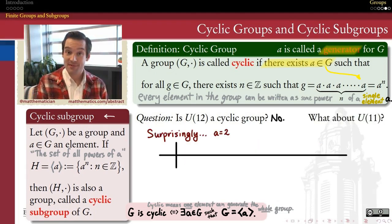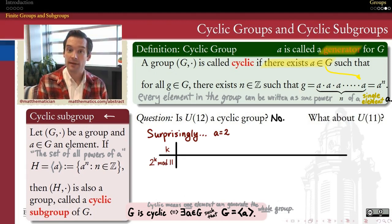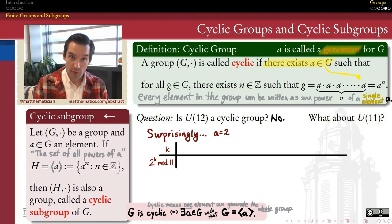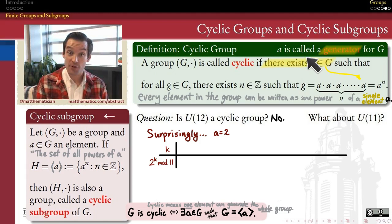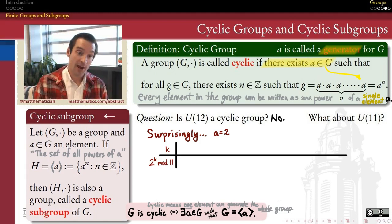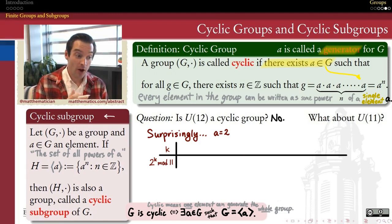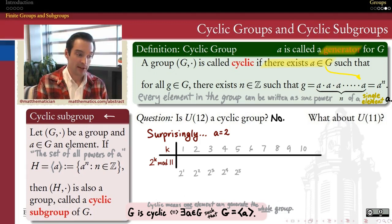What about U11? I'll put the surprise out immediately: U11, the set of multiplicative residues mod 11, actually is a cyclic group. To prove that something is a cyclic group, we need to substantiate an existential claim — we need to show there exists a generator whose powers account for the entire group. I'm going to claim that 2, the residue 2 mod 11, actually does account for all the elements in U11 when we look at its powers.